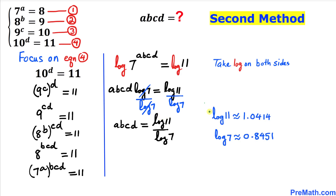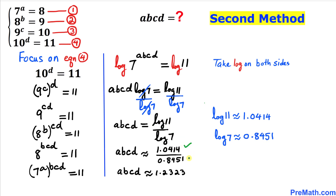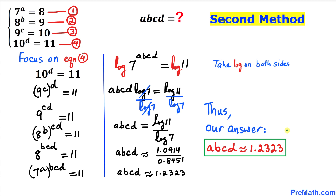Using a calculator, log of eleven is approximately 1.041414 and log of seven is approximately 0.8451. Plugging in these values, a times b times c times d turns out to be approximately equal to 1.2323. Thanks for watching and please don't forget to subscribe to my channel for more exciting videos. Bye!